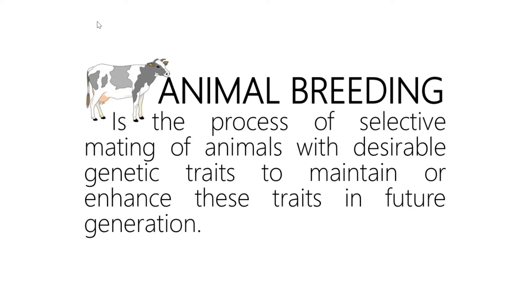So far we've been talking about selecting certain animals for breeding. There is artificial selection and also natural selection. We're going to continue with artificial selection. Generally we do this because animals need to be bred on farms by breeders. Basically, animal breeding is the process of selecting certain characteristics that we see in individuals.